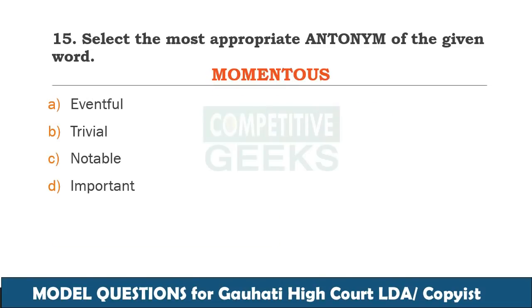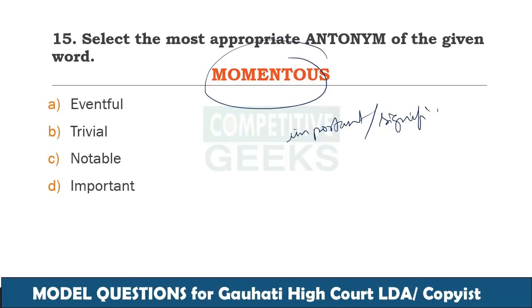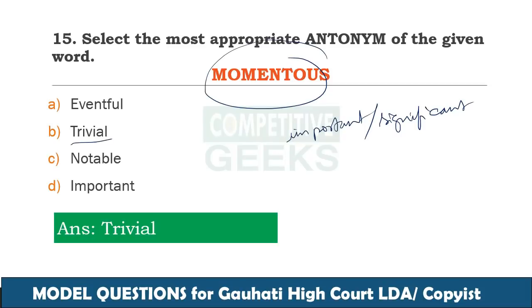The next word is momentous. Momentous means important, significant. The antonym is trivial. Trivial means something of less importance.